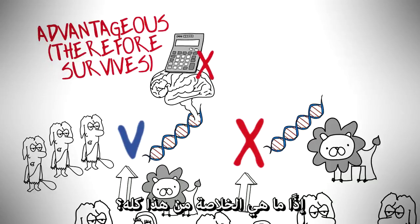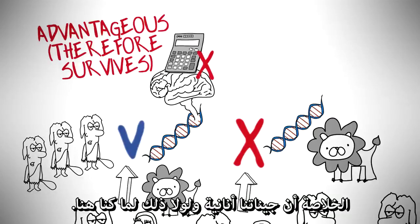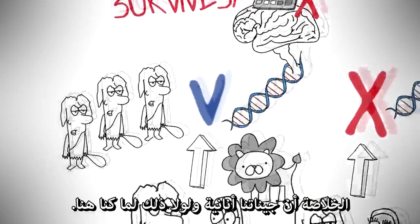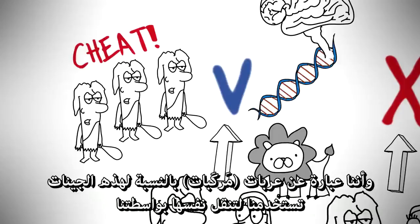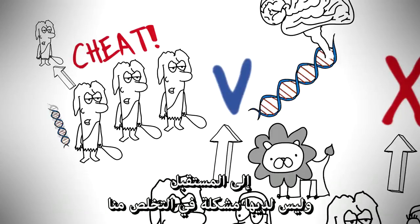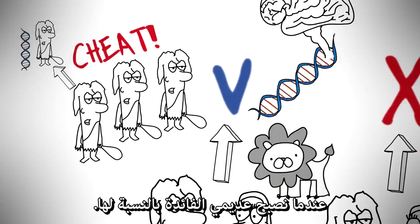What is the conclusion for all of this? Our genes are selfish — otherwise we wouldn't be here — and we're simply vehicles for these genes to transport themselves into the future. They have no problem throwing us away once we're no longer of use to them.